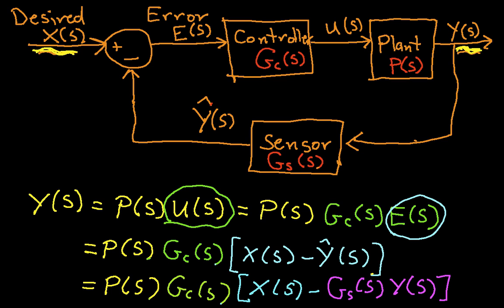So Y-hat of s is equal to Gs of s times Y of s. Okay. So what we have here is Y of s on this side, we have another Y of s over here, we have X of s, and everything else is a transfer function of one of the components or one of the subsystems: P(s), Gc(s), and Gs(s).